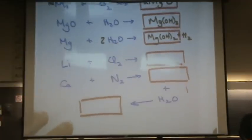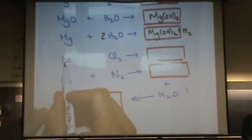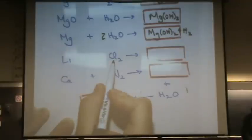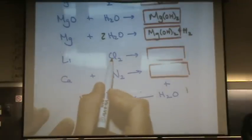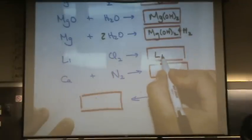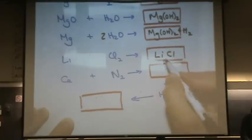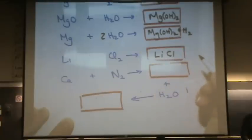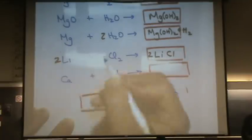Let's go to the next one. Metal and halogen — that will add a Cl⁻. So it's lithium, Li⁺ and Cl⁻, so it's lithium chloride. Two Cl, so we'll put a two there and a two here.